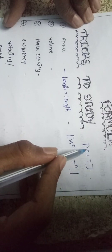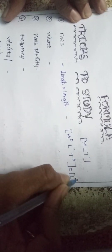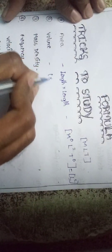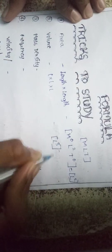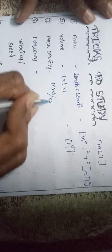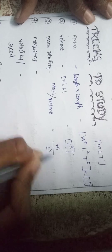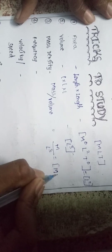If you have mass, M is its value. If you have length, L is its value. Area is length into length, so L squared. For mass density, it is mass by volume — mass is M and volume is L-cube, so the formula is M divided by L-cube, giving M L⁻³.